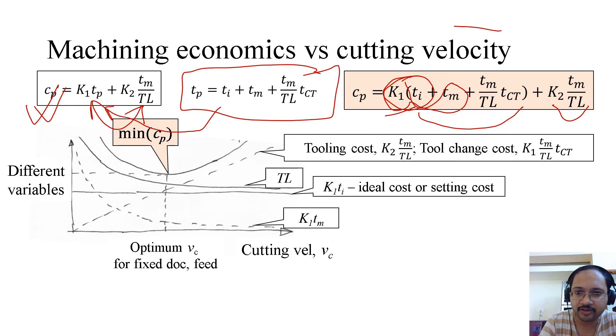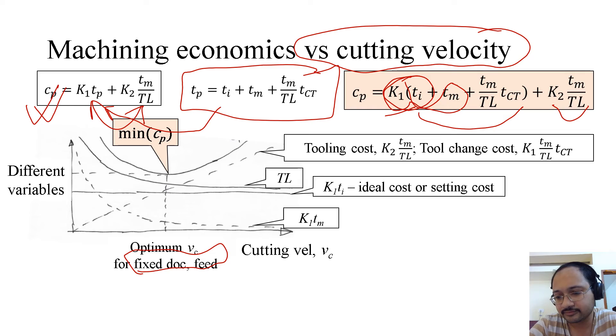Now we have mentioned here machining economics versus cutting velocity. So what are we assuming? We are assuming the depth of cut and the feed are fixed. So if the depth of cut and the feed are fixed, that means we can check the machining cost or machining economics with respect to cutting velocity. Now let us try to understand this figure. So this plot has a number of variables in the y-axis, and in the x-axis we have cutting velocity.